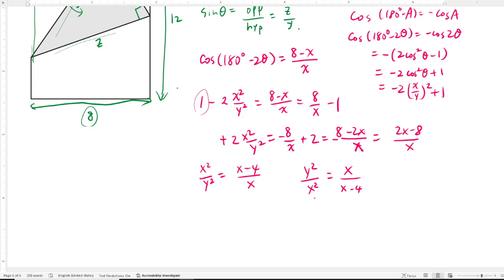We can multiply by x squared, then we get y squared equal to x cubed over x minus 4.